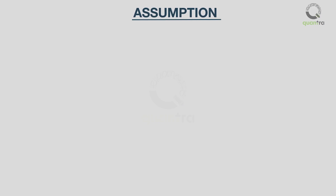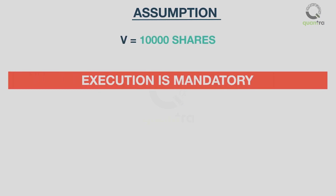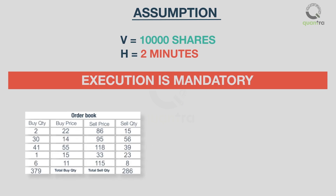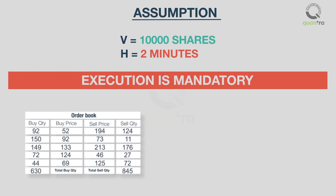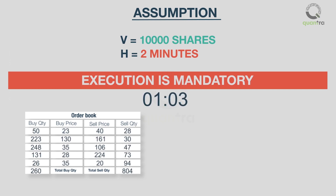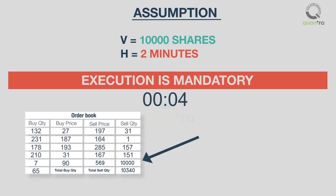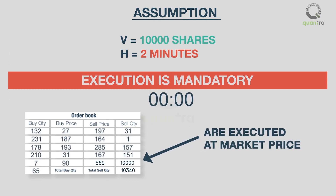The problem is defined so that the execution of all 10,000 shares is mandatory. Any inventory remaining at the end of time H — two minutes — is immediately executed at market prices at the close of the allotted time. So we will have to eat into the opposing book to execute the orders, no matter how bad the prices are, as we have run out of time and are left with no choice. This requirement plays a crucial role in defining the algorithm.